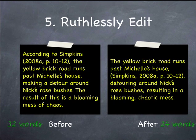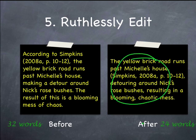That currently has 32 words. I can rewrite it to have only 24: 'The yellow brick road runs past Michelle's house (Simpkins, 2008A, page 10 to 12), detouring around Nick's rose bushes, resulting in a blooming chaotic mess.' The rewritten version still encompasses the same ideas but is only 24 words versus the original 32 — a saving of eight words. Eight words isn't necessarily a lot, but it's eight words you can use for something else. So ruthlessly edit, rewrite what you have, try to conglomerate it together, keep the essentials, and see if you can break it down to use fewer words.